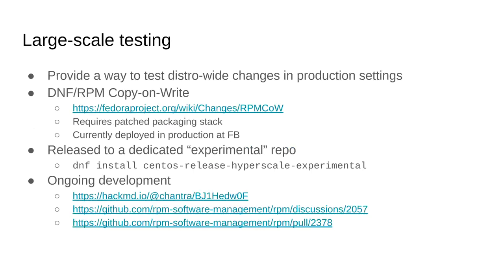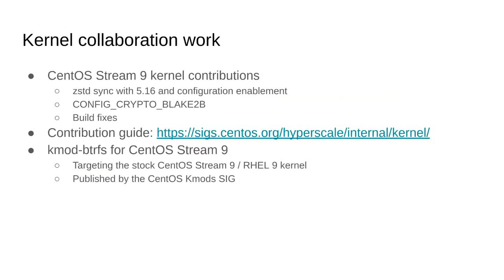If you want to try this, it is available in the same repository mentioned before. We've been leveraging this work to also contribute to the CentOS Stream 9 kernel proper — right now it's mostly been build fixes and enablement changes, but in the future we'd like to maintain subsystems such as Btrfs directly upstream in the CentOS Stream 9 kernel so we don't have to keep them downstream. We have documentation specifically on how to contribute and work on the CentOS Stream 9 kernel. I also wanted to mention the KMOD SIG, which maintains the exact same Btrfs code but as a KMOD, so if you run a stock CentOS Stream 9 kernel you can use kmod-btrfs — that's been a nice example of synergy between SIGs.